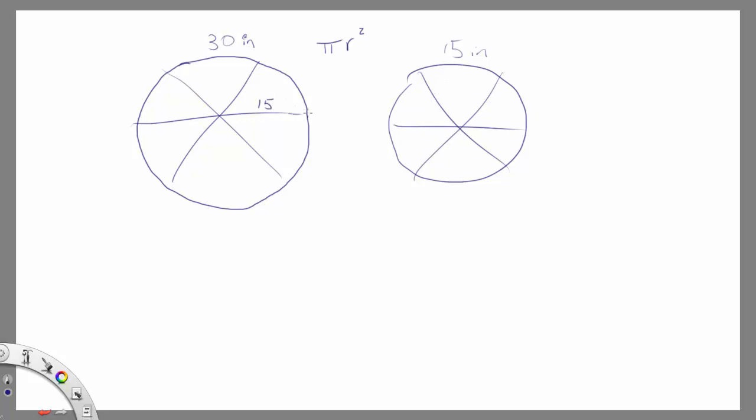The radius of the 30-inch pizza is 15, because the 30-inch is the measurement of the diameter. That's pizza talk. But yeah, 30-inch pizza, 15-inch radius. And this guy's radius is 7.5 inches.